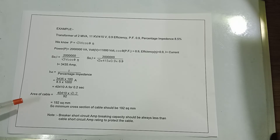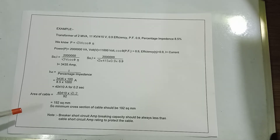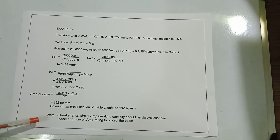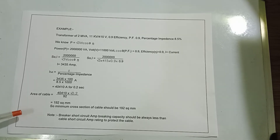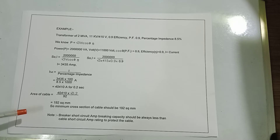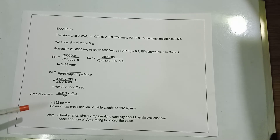When choosing HT cable cross section for short circuit current, never select a cross section below 192 square mm. Note: the breaker short circuit ampere breaking capacity should always be less than the cable short circuit ampere rating to protect the cable. If the breaker does not open in time, the cable will be damaged.